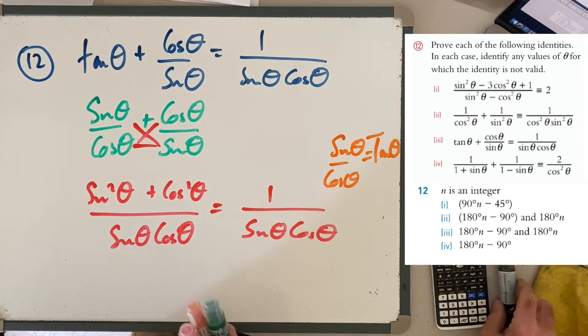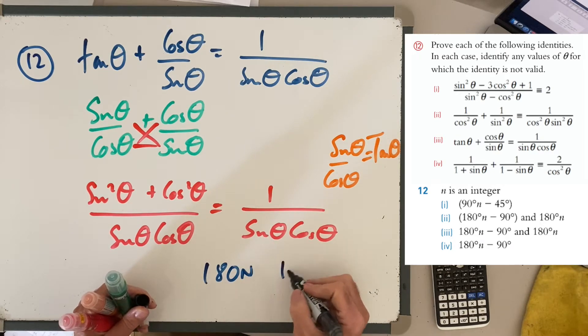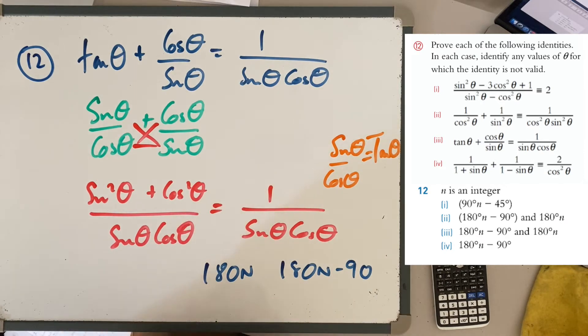Like the previous questions, it doesn't work for 180n, nor does it work for 180n - 90°, taking out the cosine one. There, the denominator equals 0, you get asymptotes, undefined.